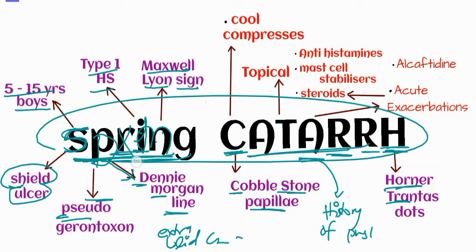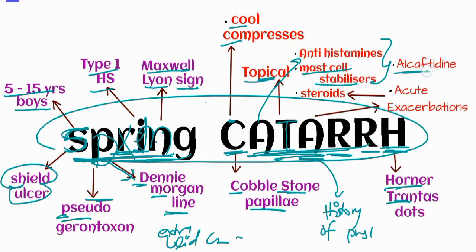For treatment, 'C' indicates cool compresses, given first. 'T' indicates treatment — the main first-line treatment is topical antihistamines and mast cell stabilizers. A drug having both these features is alcaftadine. The next 'A' indicates acute exacerbations — in case of acute exacerbations, we give topical steroids.